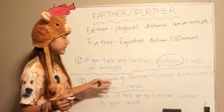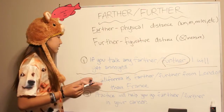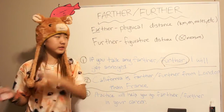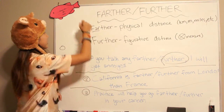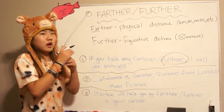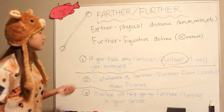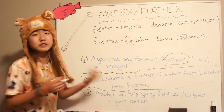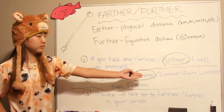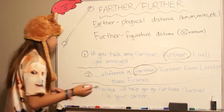Second example: California is farther or further from London than France. Can you measure the distance from one place to another? Pretend this is California and this is London — we can actually measure it, even if it's a lot. It's probably a very long distance because it's almost on opposite sides of the world, but you can still measure it. So it would be farther, because you can actually measure it with miles or kilometers.